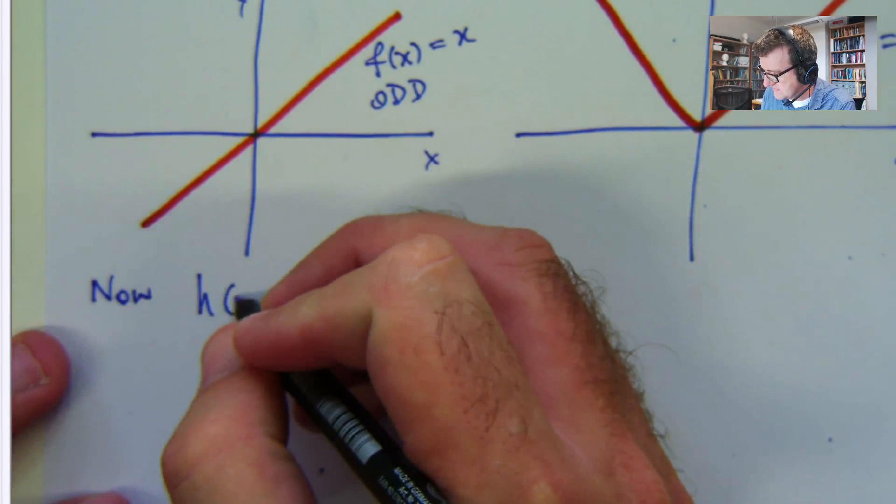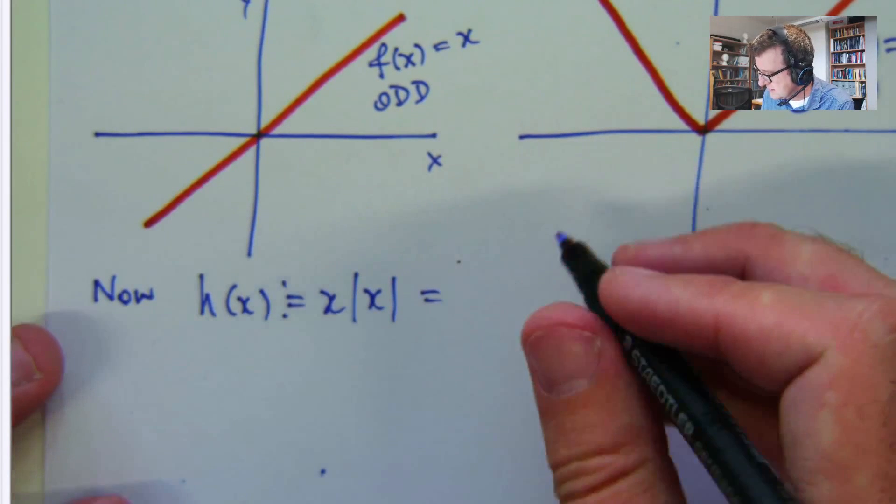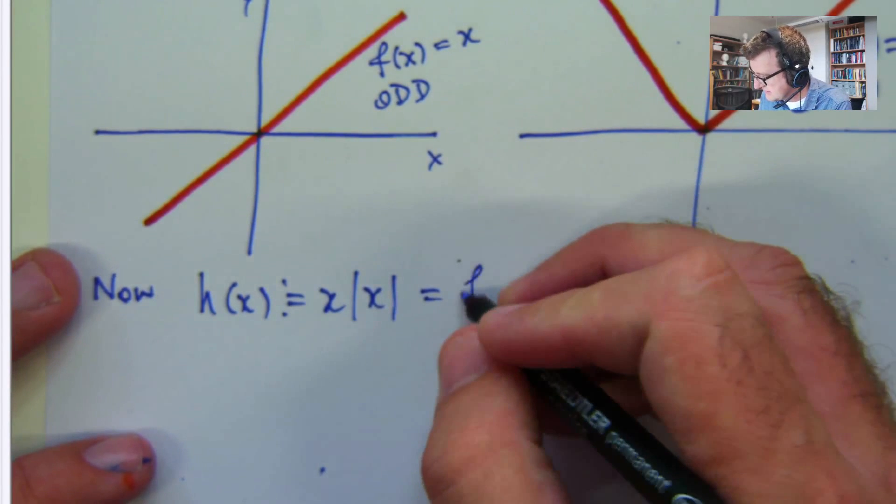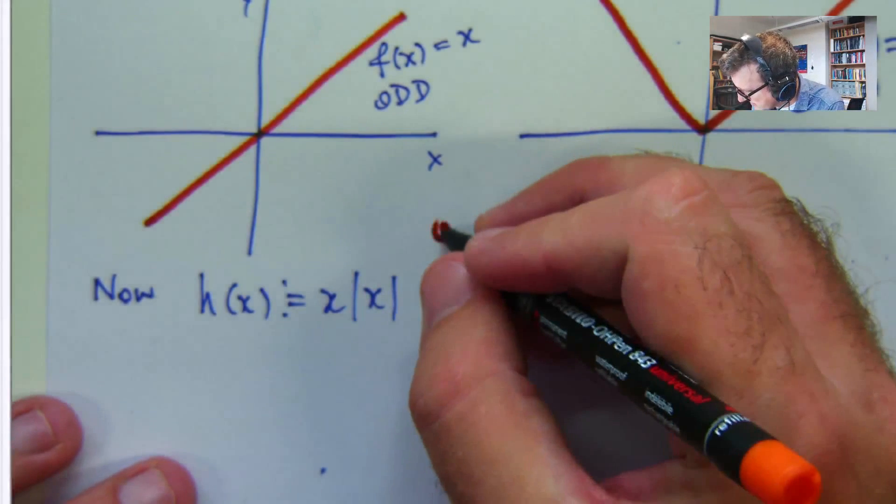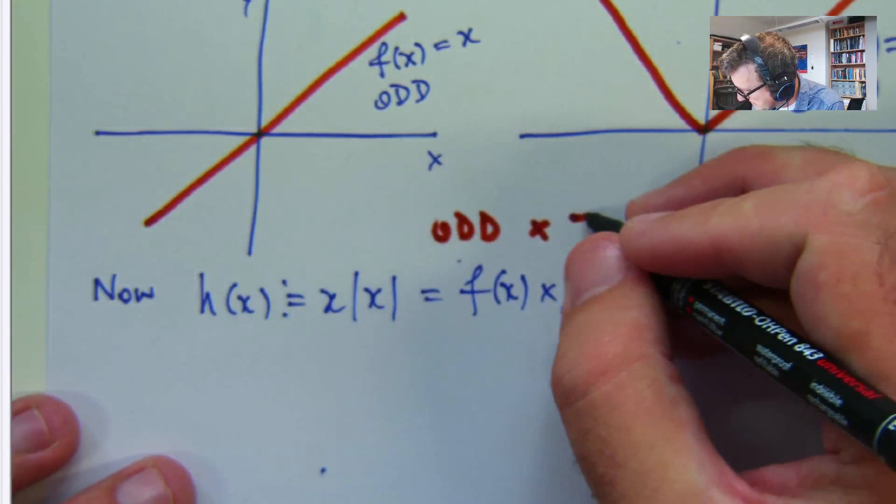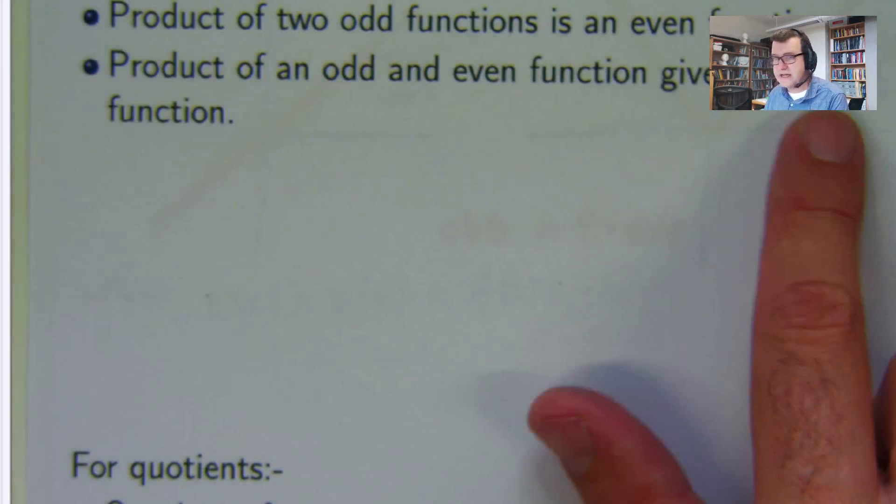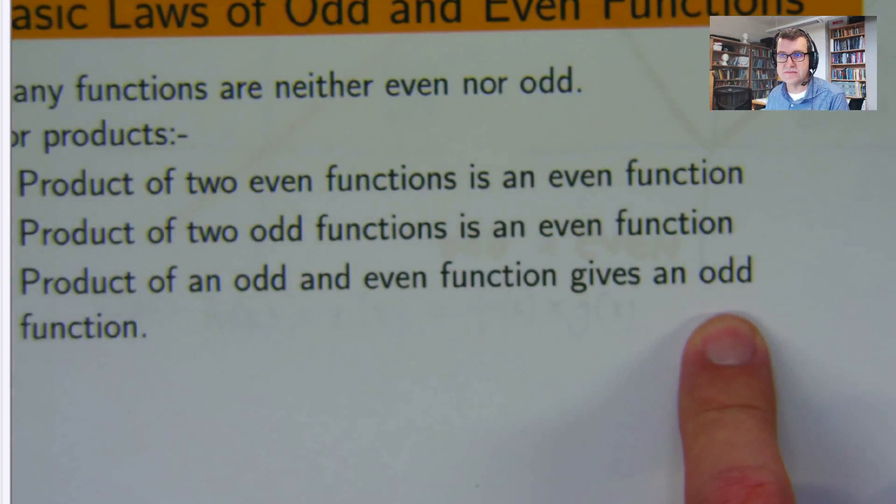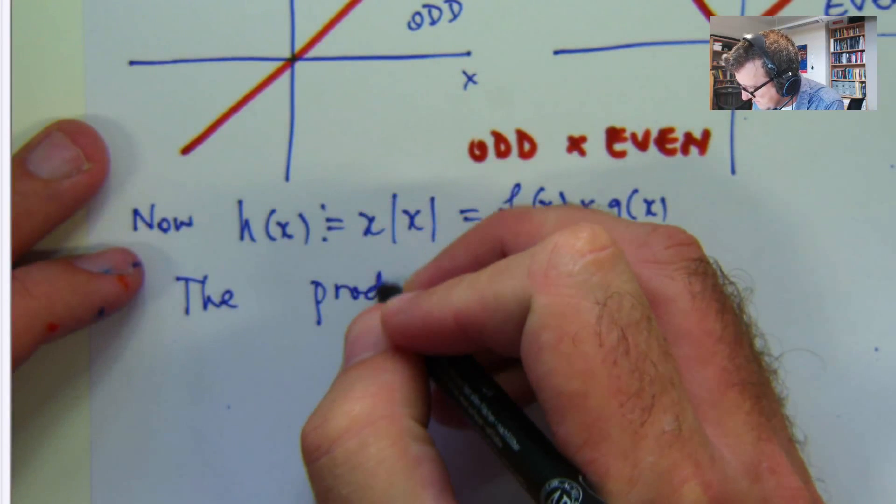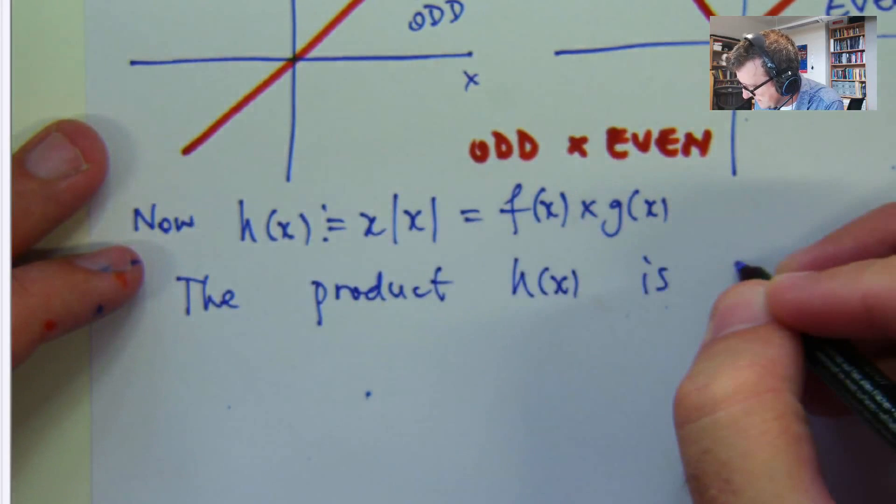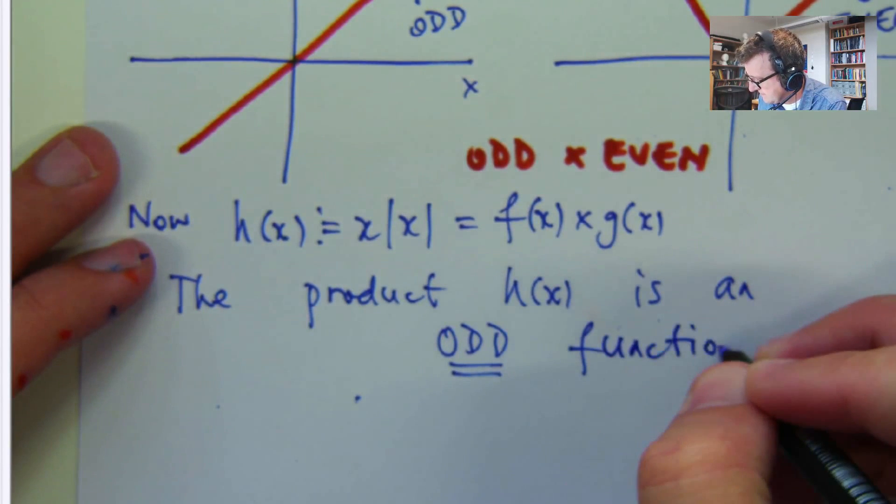So let's do this. Let's define h of x to be this, so it's our odd function times an even function. That gives you, according to the third dot point here, an odd function.